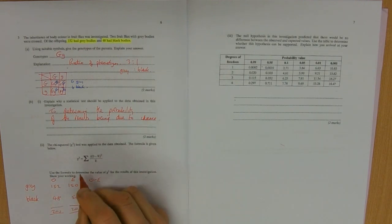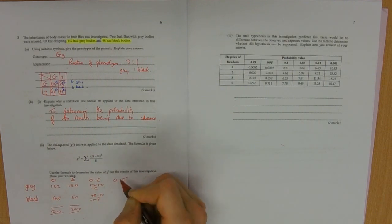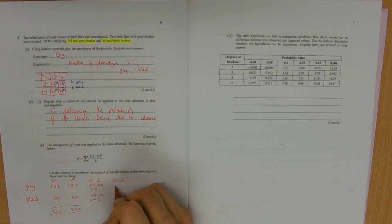O minus E. 152 minus 150 is 2. 48 minus 50 is minus 2. O minus E squared. 2 squared equals 4. Minus 2 times minus 2 is 4, it's not minus 4.